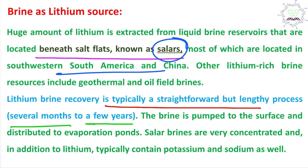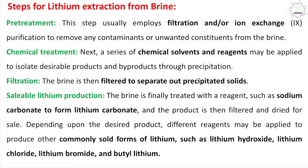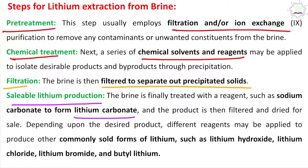This is one of the disadvantages. The brine is pumped out to the surface and distributed over evaporation ponds, from where extraction starts. These extractions are associated with three steps: pretreatment, which involves filtration and ion exchange; chemical treatment, where reagents are utilized and ion exchange reactions happen; and finally filtration, where precipitates or insoluble materials are separated. Finally, lithium production occurs — the filtrate produces lithium carbonate, which is then converted into other lithium compounds such as lithium hydroxide and lithium chloride.